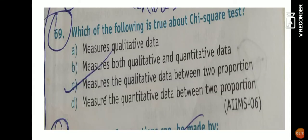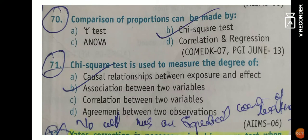Now let's look at some MCQs. 'Which of the following is true about chi-square test?' Option A says it measures qualitative data; option C says it measures qualitative data between two proportions. Both are correct, but C is more accurate — this is from MS 2006. Read carefully: it cannot be B because chi-square measures qualitative, not quantitative. For question 70, 'Comparison of proportions can be made by' — the answer is chi-square test, since its main applications are proportion, goodness of fit, and association. For question 71, 'Chi-square test is used to measure the degree of' — the answer is association.